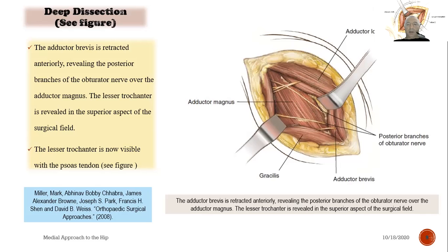With the psoas tendon now exposed, I can identify the structures: this is the adductor longus, this is the gracilis. You can see the adductor magnus and the posterior branches of the obturator nerve, and on this side, the adductor brevis.